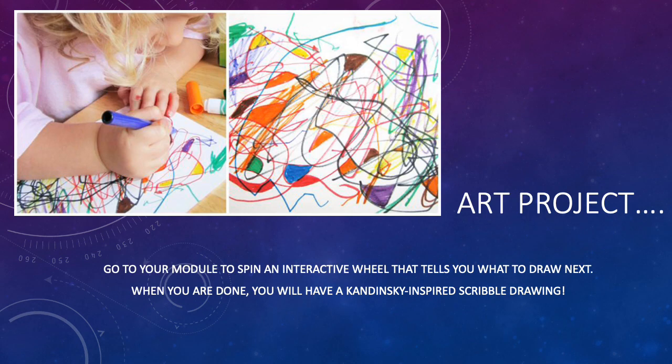It's time to make your art project. Go to your module in your Canvas course to spin an interactive wheel. It will tell you what to draw next, and next, and next. Please do that five times, or as many times as you'd like. When you are done, you will have a Kandinsky-inspired scribble drawing.